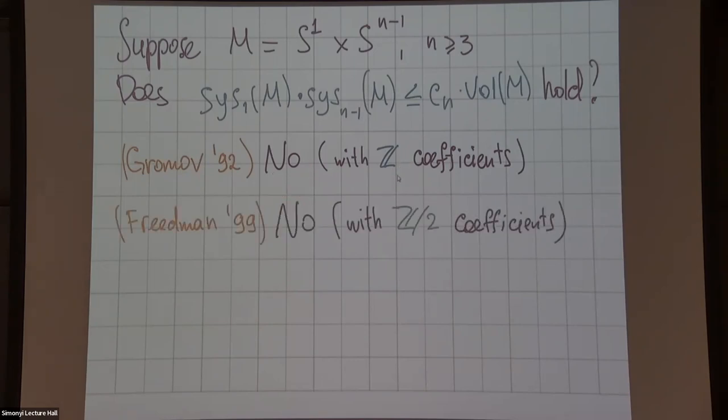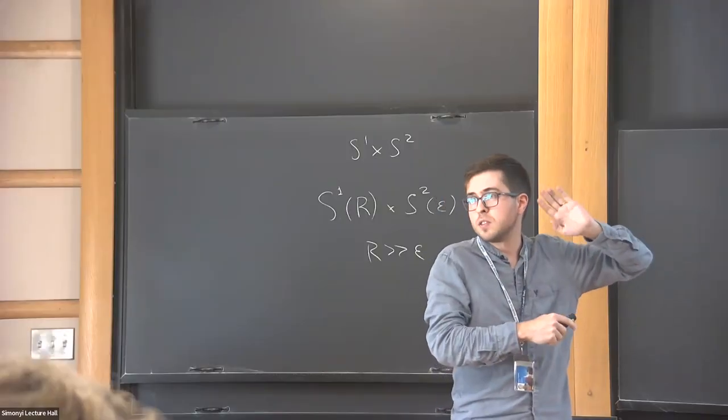The same example does not work with Z mod 2 coefficients, but the answer is still no with some much more complicated examples that Mike Friedman found even with mod 2 coefficients. Those examples have to do with some arithmetic hyperbolic surfaces for which you also start from the same construction, multiply by the interval, glue top to the bottom, and then do some surgery. In these negatively curved situations, the inequality is still not true. He makes an example of an arithmetic negatively curved surface.